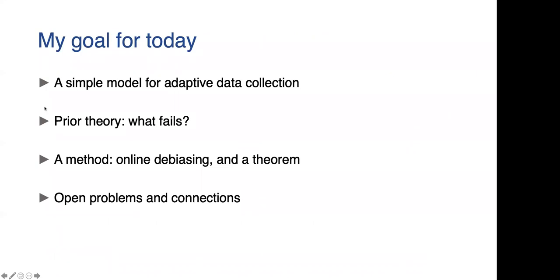I'll make two observations about this. One is that the adaptive data collection doesn't seem to affect very much the size of the estimate error. The width of these two Gaussians looks roughly the same. But the estimator can be biased, sort of shifted to the left. So the shape can change. My goal for today is to tell you about a very simple model for adaptive data collection which captures these issues very well and makes them very clear. I'll tell you what we know from prior theory and sort of where is the point in earlier theoretical work where things fail.